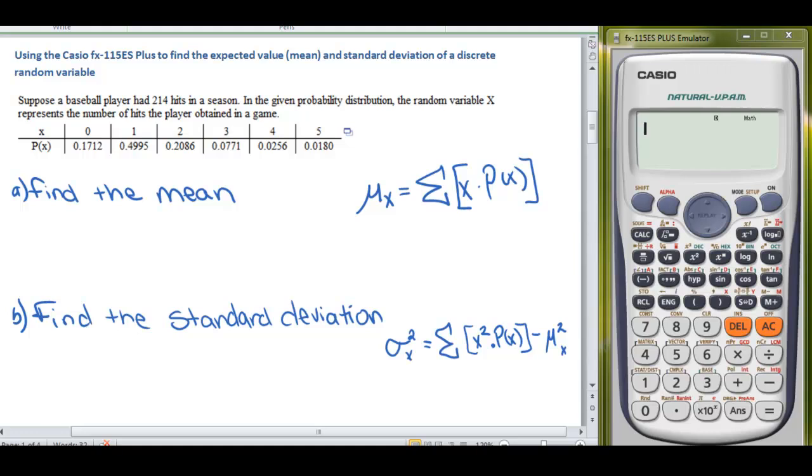When we're talking about discrete random variables, we can use our Casio to help us find the expected value or the mean, as well as the standard deviation. It'll take a few steps, but we'll still get there.